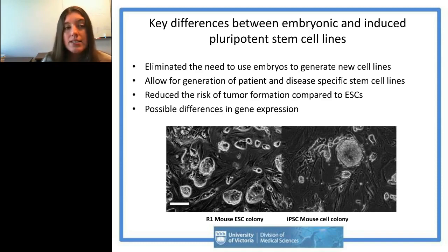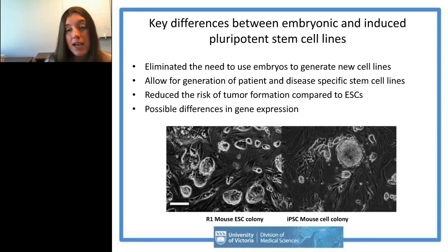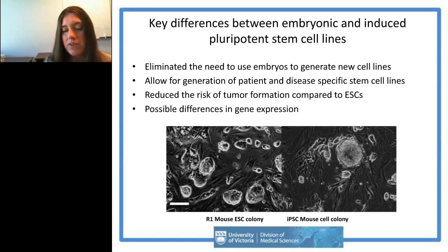As iPSC lines have been around for a few years and people have started doing in vivo studies, one interesting finding is that some iPSC lines show reduced risk of tumor formation compared to embryonic stem cells when transplanted into animal studies. There's also a lot of work characterizing differences in gene expression and epigenetics between embryonic stem cells and reprogrammed iPSCs, and whether you can substitute one for the other.